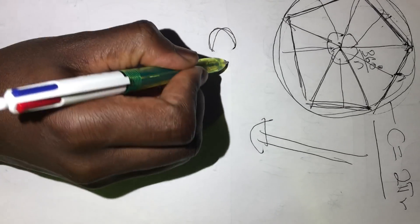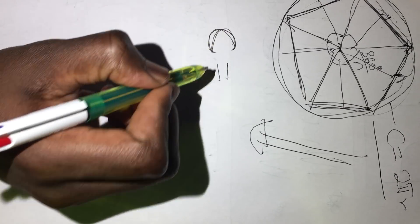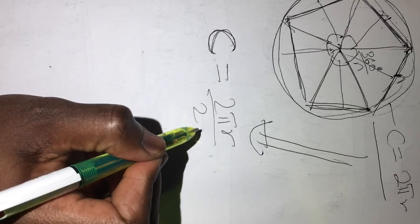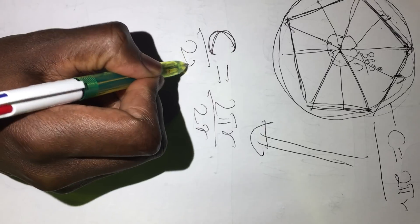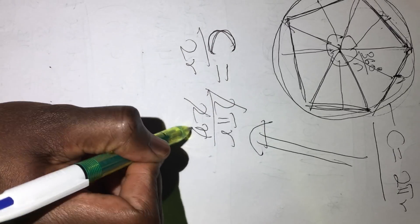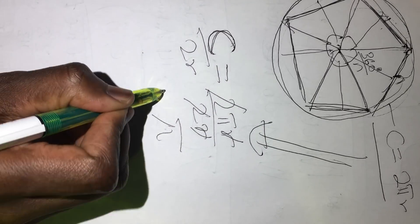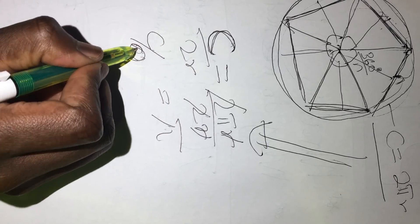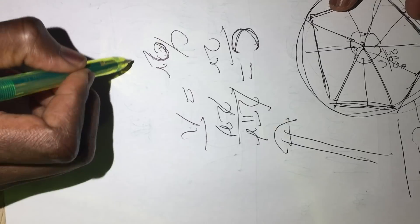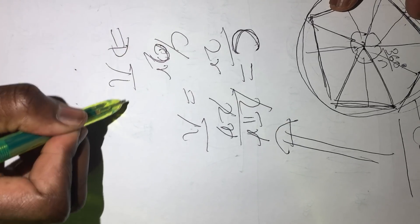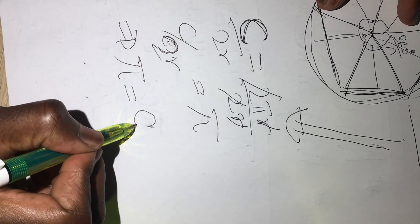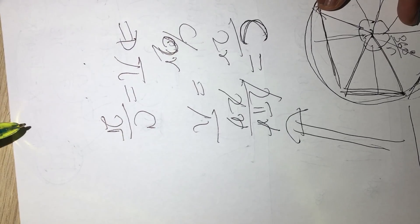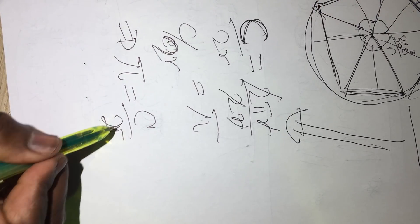So, Pi can be equal to, let's see, if we get 2πR from the circumference, divide both sides by 2R by 2R.